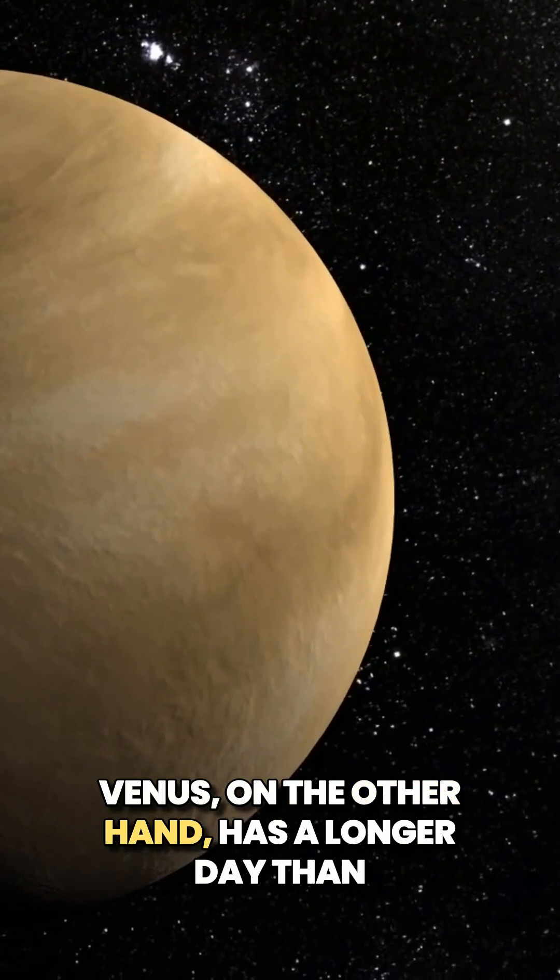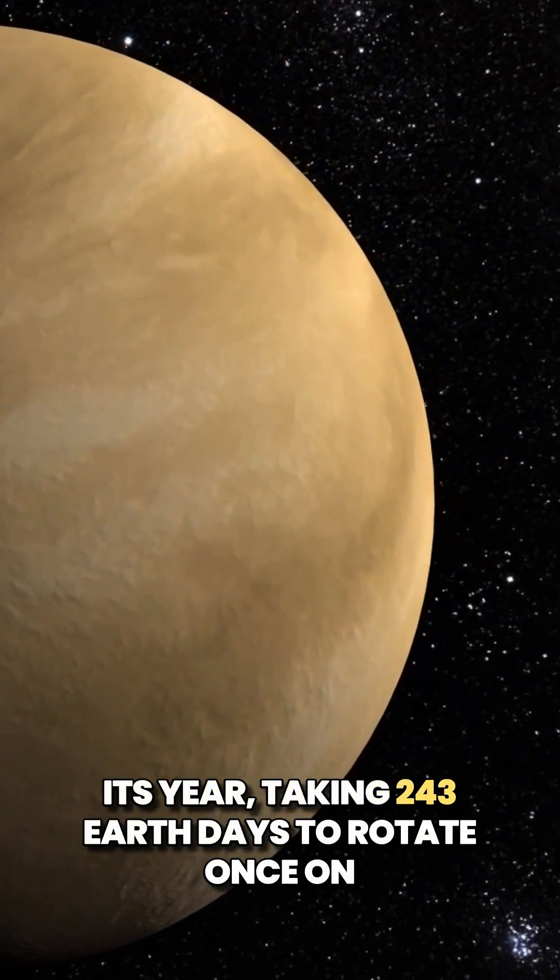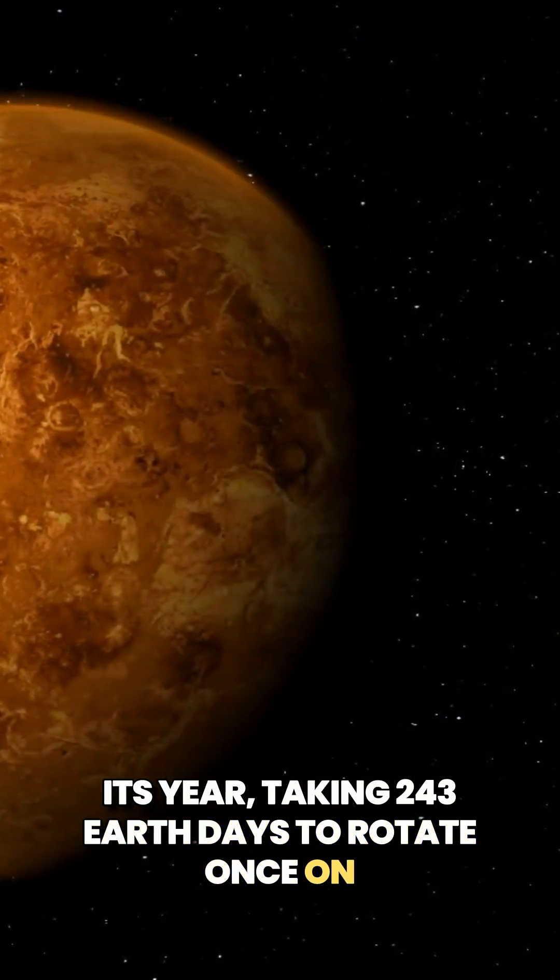Venus, on the other hand, has a longer day than its year, taking 243 Earth days to rotate once on its axis, but only 225 days to orbit the sun.